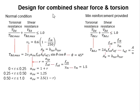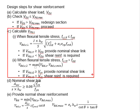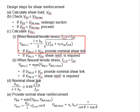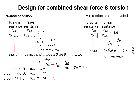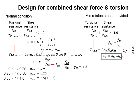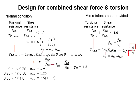For Vrd,c, you refer to the relevant equations for uncracked and cracked regions. Depending on which region you are checking, you use Vrd,c accordingly. For Trd,c, this represents the torsional resistance of the concrete alone without reinforcement. It is given by an equation in terms of the effective torsional area, fcd, and the effective wall thickness of the member. The effective thickness is determined by dividing the effective area by its perimeter.